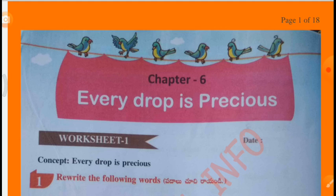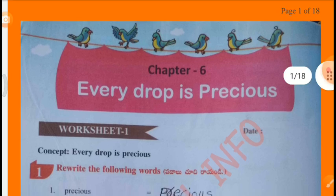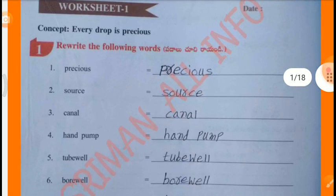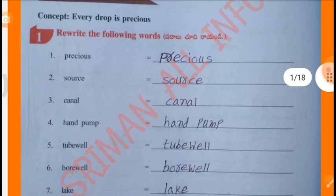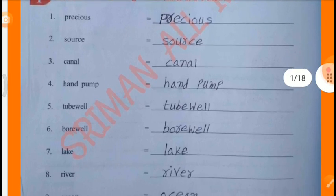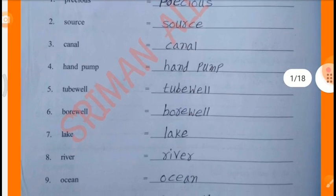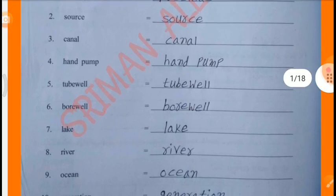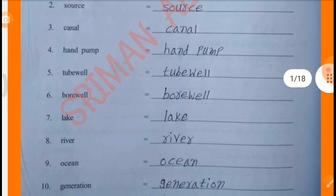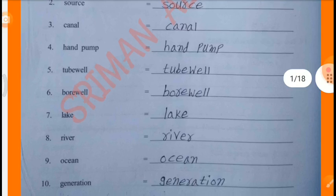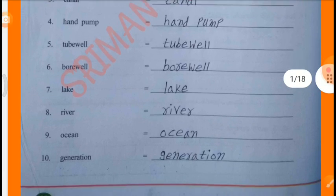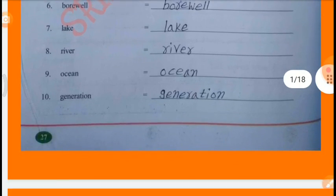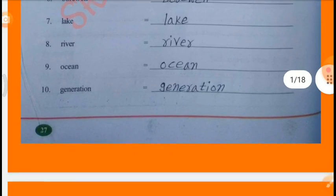Worksheet 1, Concept: Every Drop Is Precious. Relate the following words: Precious, Source, Canal, Hand Pump, Tube Well, Borewell, Lake, River, Ocean.